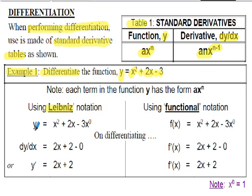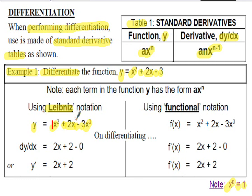Looking at the Leibniz notation, we're given y = x² + 2x − 3. Notice I've written the last term as −3x⁰ to make it of the form ax^n. x⁰ equals 1, so I haven't changed the equation. There is also a 1 in front of x² and a 1 against x in the second term — x to the power of 1 — and I'll put those in because it helps with the differentiation. Now differentiating y with respect to x to form dy/dx, using the forms in Table 1: